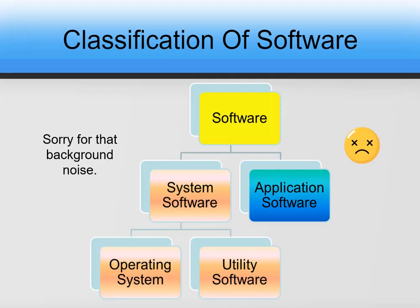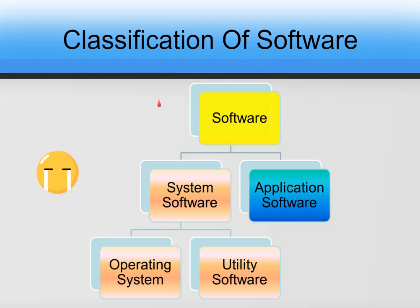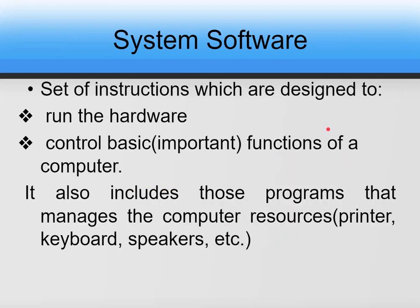Hi kids, in my previous video we already studied the classification of software. I spoke about what software is, the types of software — that is system and application software — and we dealt with the types of system software. In this video we are going to see what application software is, so without wasting any time let's get started.